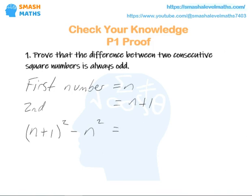We've got n plus one all squared, so that's going to be n squared plus 2n plus 1, take away the n squared. And we can quickly see that the n squared is going to be cancelled out by that one there.